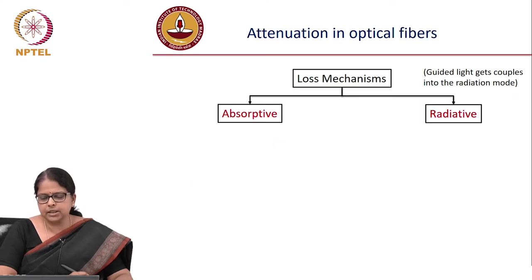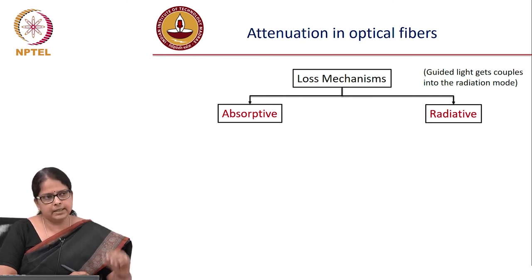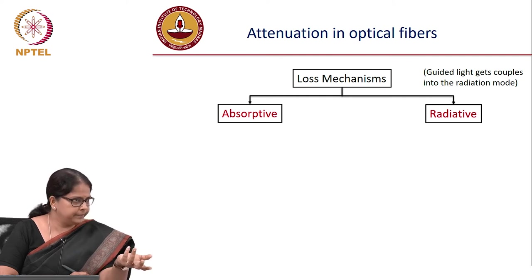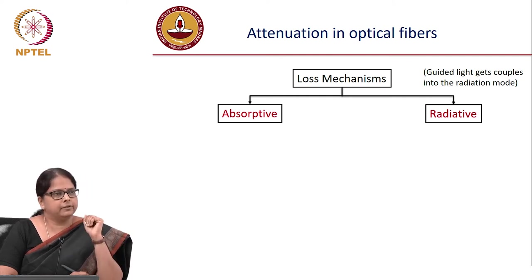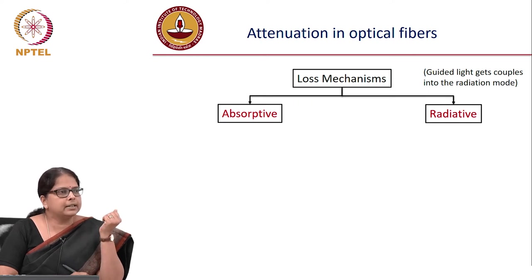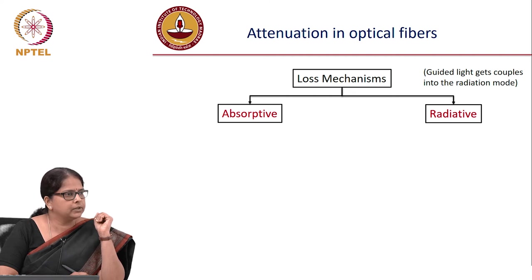The first impairment in an optical fiber is attenuation. You inject some power at the input but do not get all the power out because there are losses in the fiber. These losses are classified into two types: absorptive loss and radiative loss.